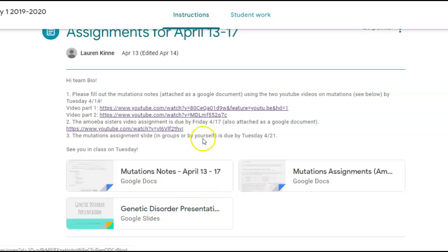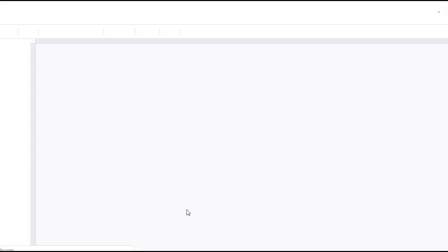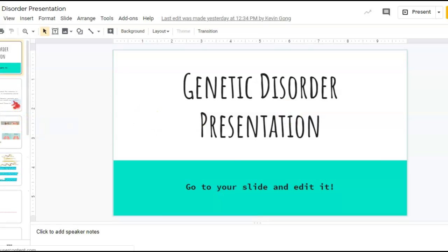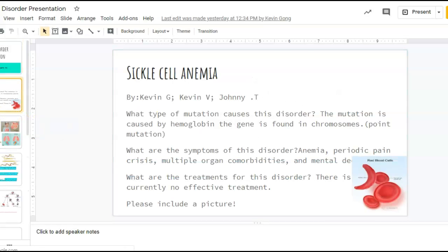So you had to turn in the fill-in notes on mutations. You had to do your genetic disorder presentations, and I'm happy to report that each group did their presentation. You can see here is the one on sickle cell anemia by Kevin G., Kevin V., and Johnny. It's a point mutation that causes periodic pain and trouble with your red blood cells.